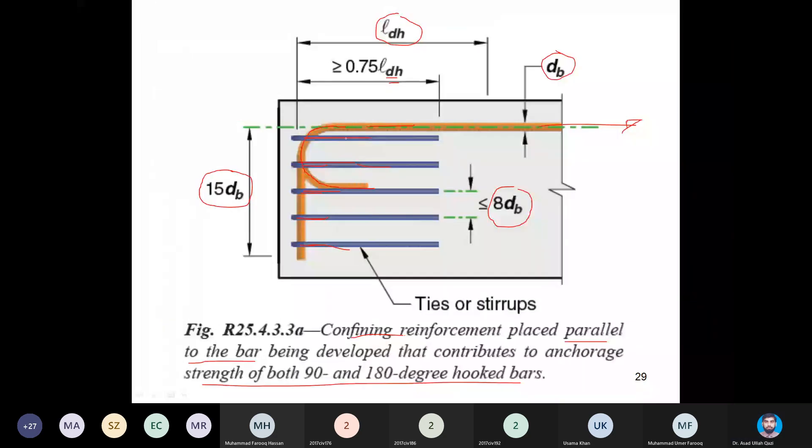First is they are saying two or more ties. If I take 180 degree bend, there are two ties which are present within that 180 degree bend. If I am talking about the 90 degree bend, in this picture it is shown one, two, three, four, five ties. They are within 15dB straight portion and they are not spaced wider than eight times diameter of the bar, and they are extending spanning up to not less than 75 percent of LDH.